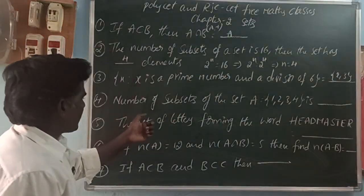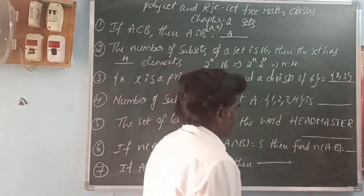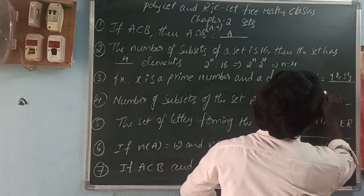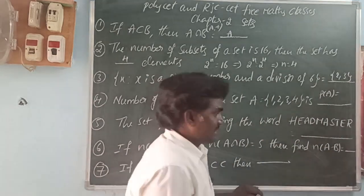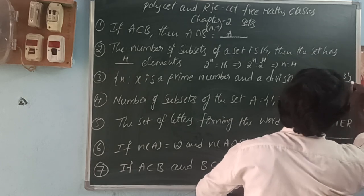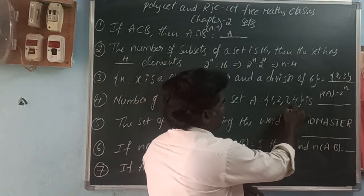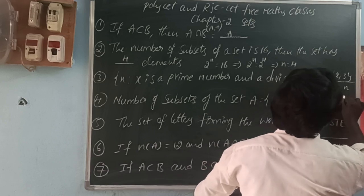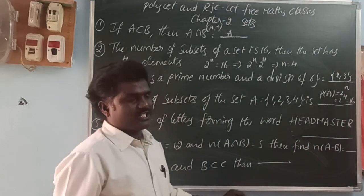Next: the number of subsets of set A equals {1, 2, 3, 4}. So, what is the formula? P of A means power set — all subsets. The formula is 2 power N, where N is the number of elements of A. How many elements are there? 4. That is equal to 2 power 4, which equals 16.